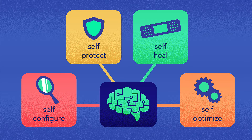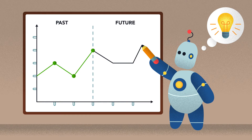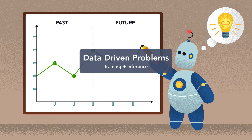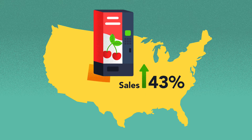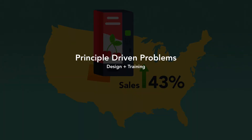Keep in mind that situations involving just one phase are rare — most problems involve two phases. For example, data-driven problems tend to involve phases two and three — learning and inference — with little design. If you want to forecast sales with historical sales data, that's a data-driven problem and it will involve phases two and three. Principle-driven problems tend to mostly involve phases one and two — design and learning.